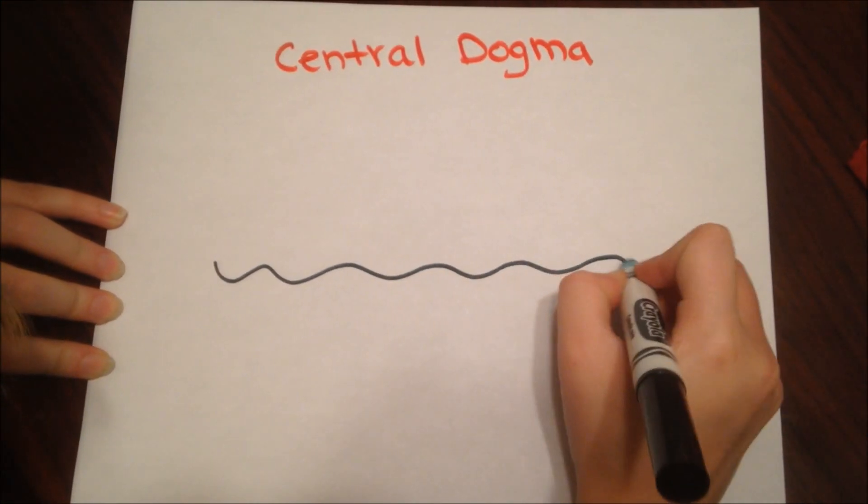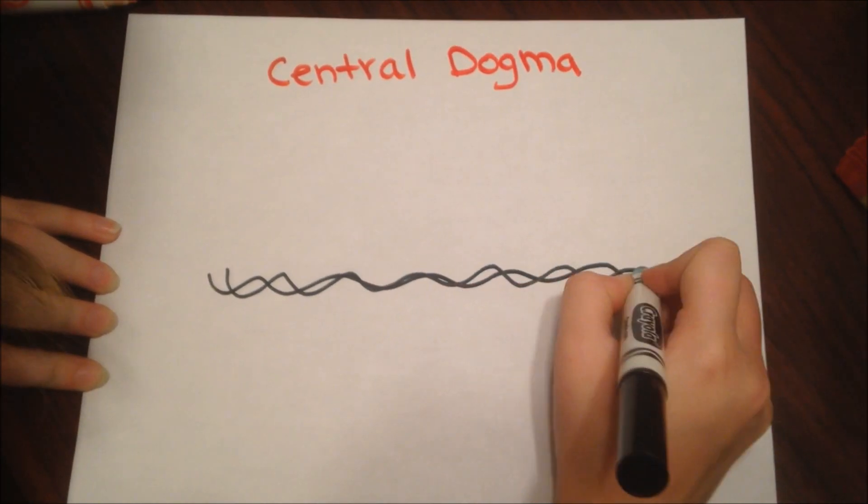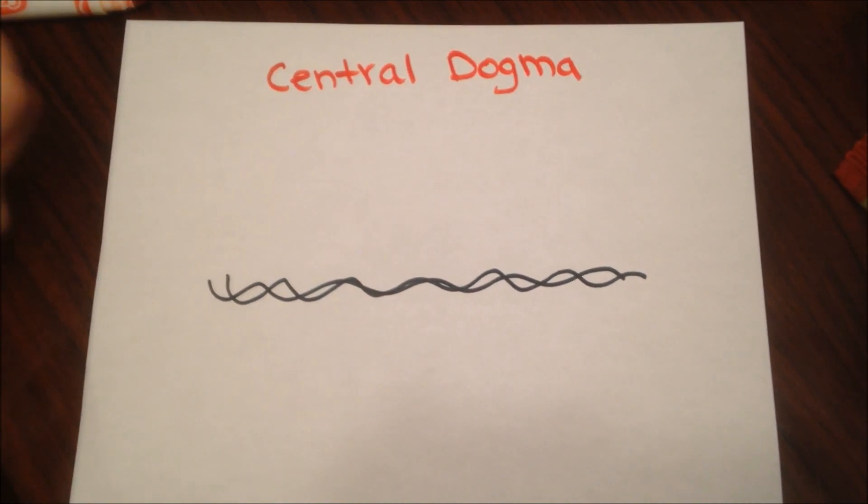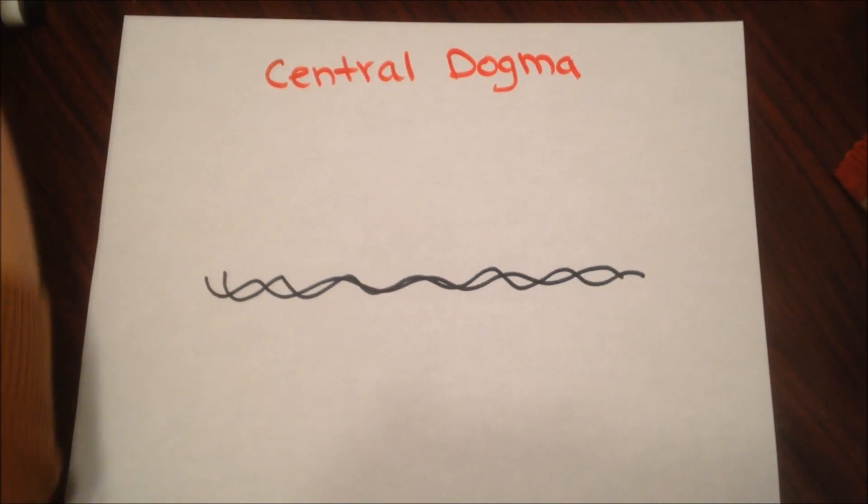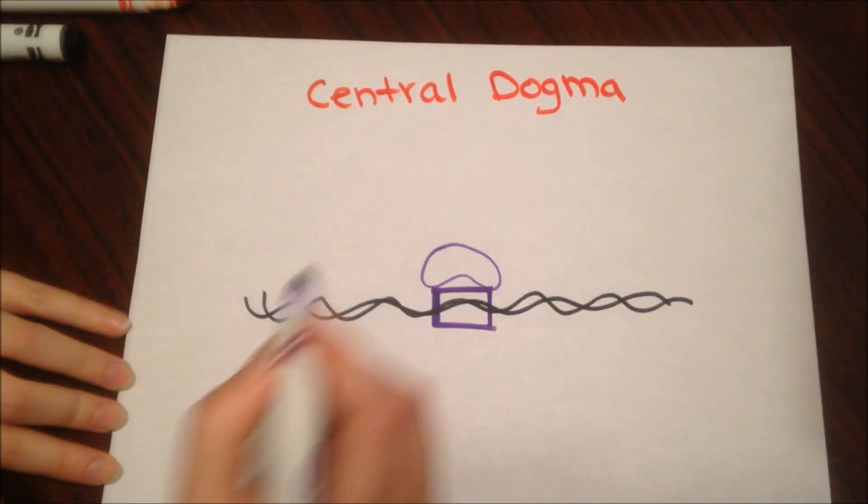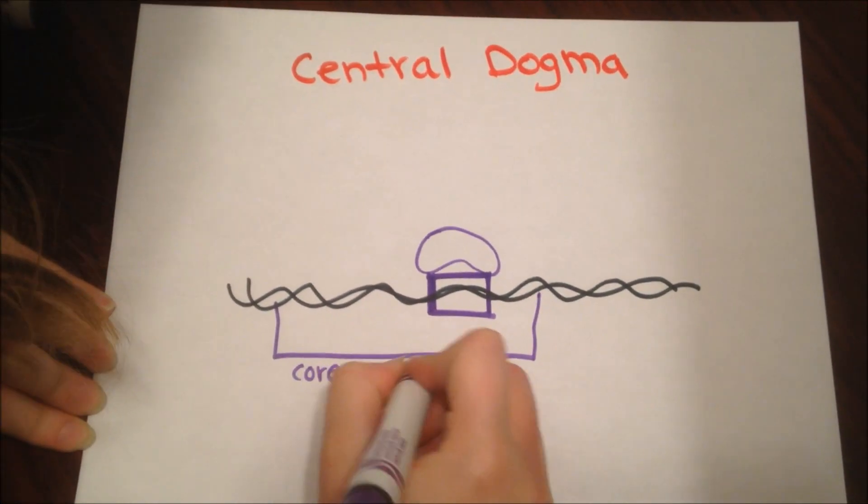In order to undergo the first step in the central dogma, the DNA must become messenger RNA, or mRNA. In order for that to happen, a Tata binding protein will attach to the Tata box. So here's the DNA and the Tata box, which is located on the core promoter.